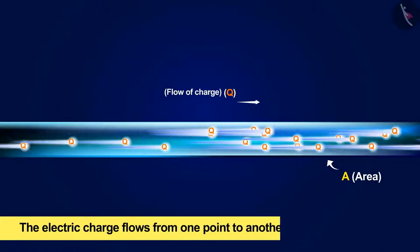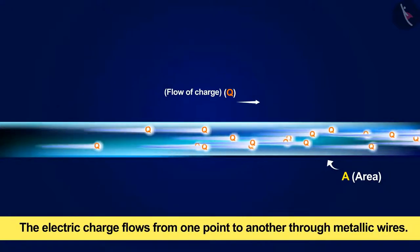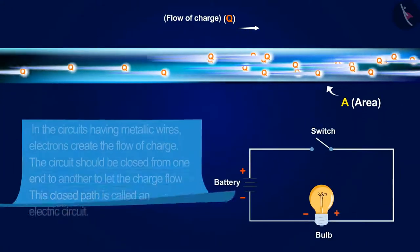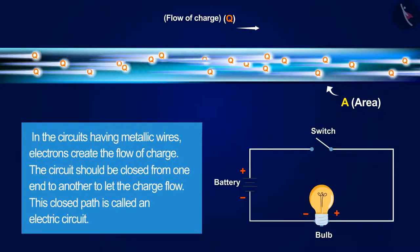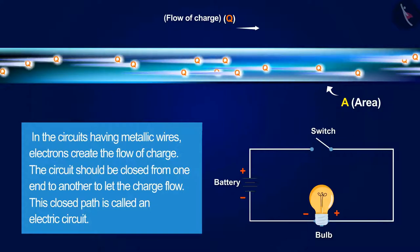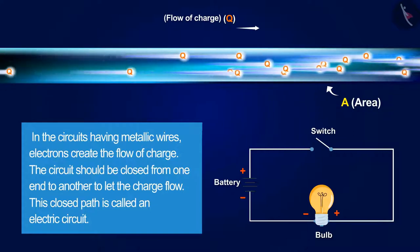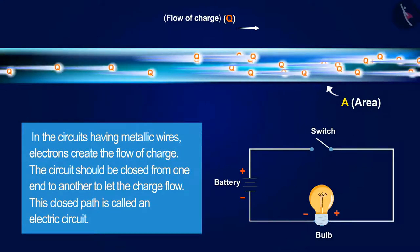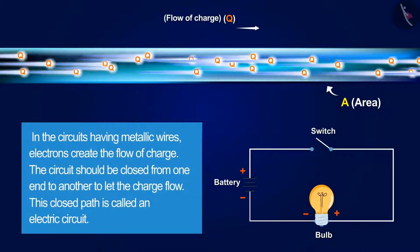The electric charge flows from one point to another through metallic wires. In the circuits having metallic wires, electrons create the flow of charge. The circuit should be closed from one end to another to let the charge flow. This closed path is called an electric circuit.